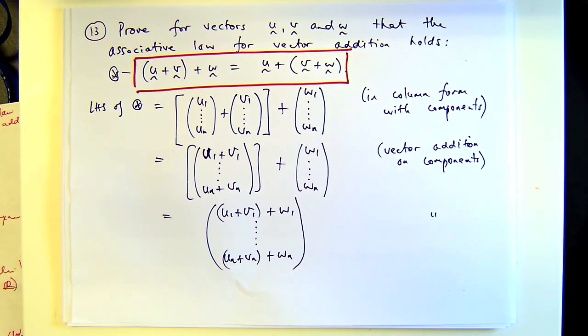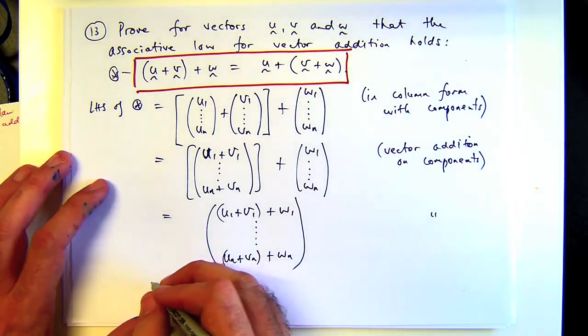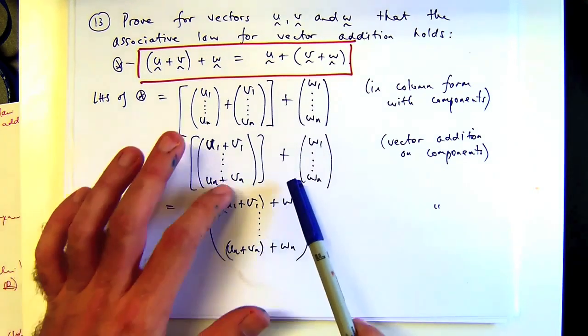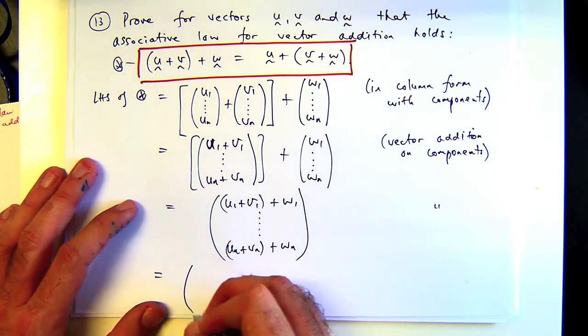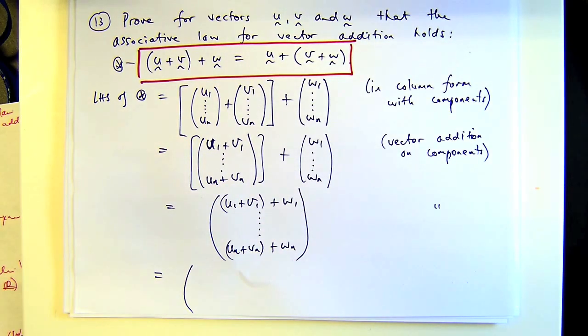Again, it's the vector addition. Now what I can do, this is where it gets pretty easy. I can now rearrange each component because they're just real numbers, and we know that the laws hold for real numbers, right? So I can rearrange those brackets because I know it doesn't matter which order I add real numbers in.